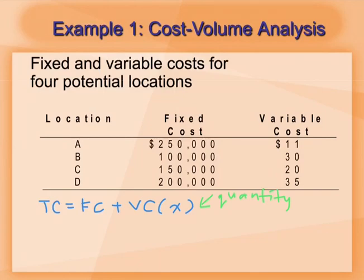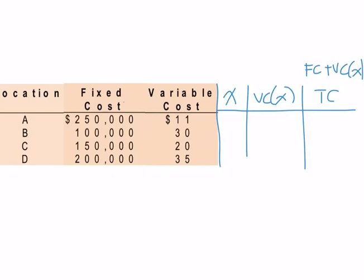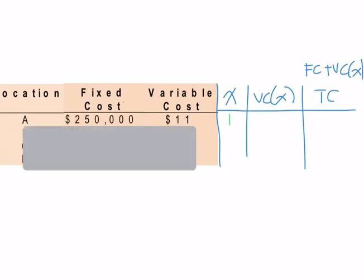First we need to choose any number of x. Any number. How to choose the number of x? x should be given a simple number of total cost that we need to plot in our graph paper. If I choose x equal to 1 and then what happened to our total cost? Now we focus to location A. So the variable cost time x is equal to 11 ringgit. And our total cost is 250,000 and 11 ringgit. So this number is very difficult to plot in our graph.